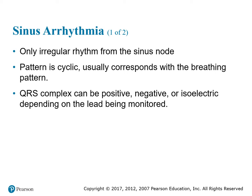The next rhythm is called sinus arrhythmia. Sinus arrhythmia is the only sinus rhythm that will have an irregular rhythm. The impulse still comes from the sinus node, but its pattern usually corresponds with the breathing pattern. Sinus arrhythmia commonly occurs in people who suffer from sleep apnea. QRS complexes can be either positive, negative, or isoelectric depending on the lead being monitored.